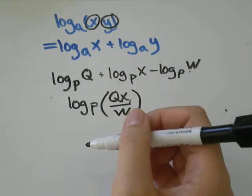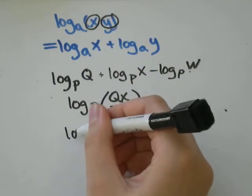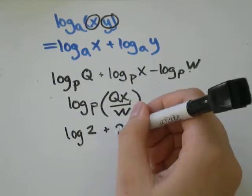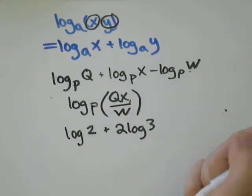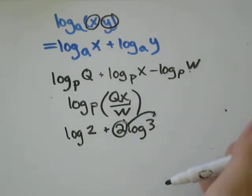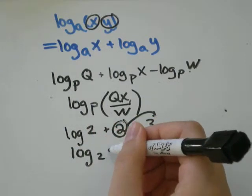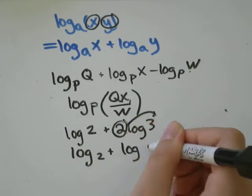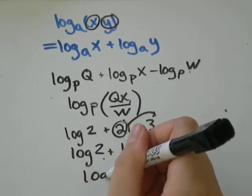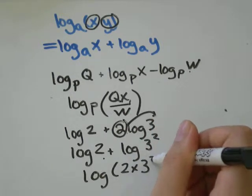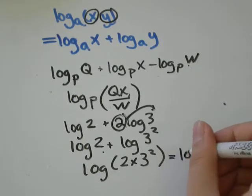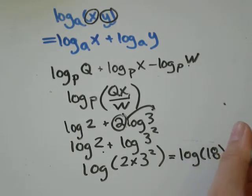You might also see something like log 2 - again, if you don't see the base written, just assume the base is 10 - plus 2 log 3. Well, first we need to use the product rule. That 2 really belongs up here as the exponent on 3. This is really log 2 plus log 3 squared. So combine those. That would be log 2 times 3 squared. 3 squared is 9 times 2 would be 18. So we can write that as log of 18.